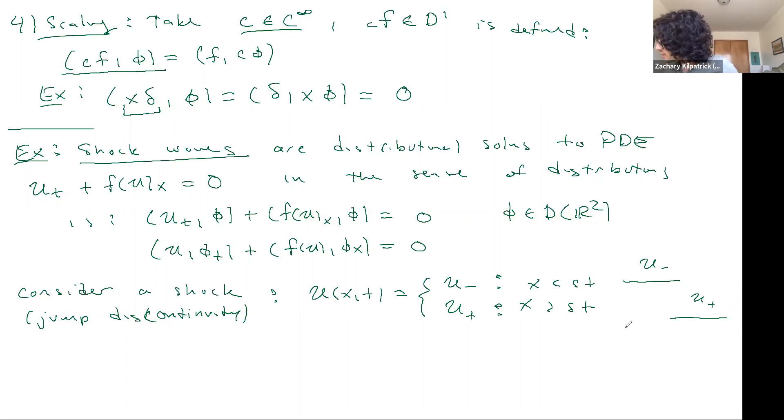And S is the unknown speed. So this is our interface here and it's propagating forward or backward, potentially at some speed S.